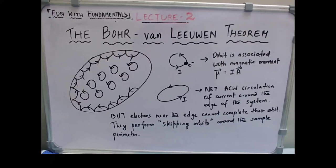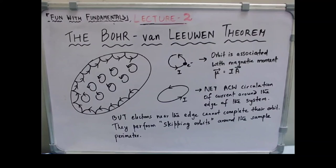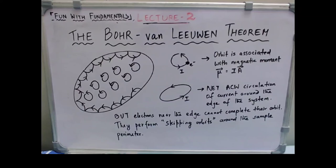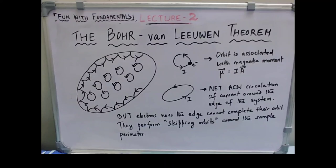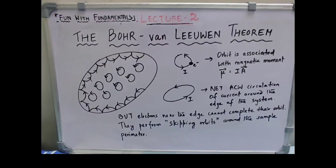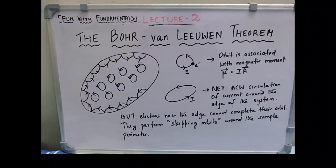But in real magnetic materials there is a net magnetization produced when kept in an applied magnetic field, so there must be a fundamental flaw in this theorem. The flaw is that we used classical concepts to prove it, which is wrong. Quantum mechanics must be brought to the forefront to explain why there is a non-zero magnetic moment associated with a magnetic material in a magnetic field, and this we shall cover in our next lecture when we introduce the quantum mechanics of spin.